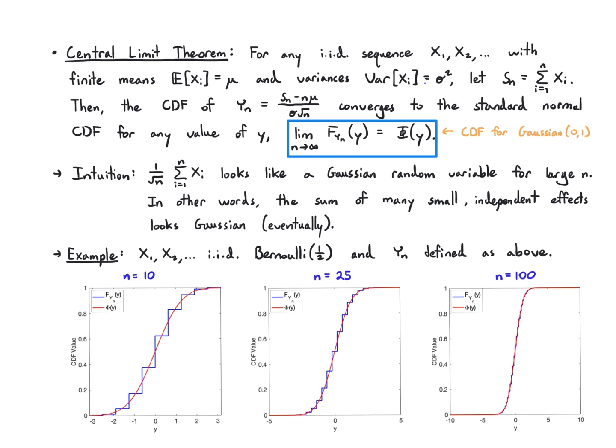As I go up to 25 Bernoulli summed together, the staircase is kind of getting narrower, and it's converging more to this Gaussian CDF, and at n equals 100, I still kind of see that staircase structure, but it's getting even closer to that Gaussian CDF, and eventually it's going to converge perfectly.